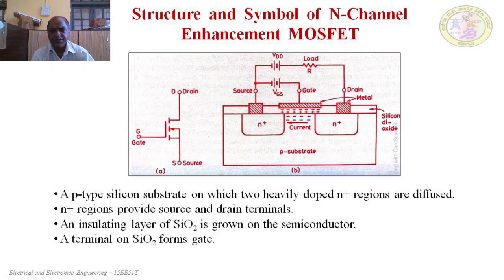In this enhancement type MOSFET, when there is no voltage at the gate terminal — even if voltage is applied between drain and source — there will not be a channel available, hence there will not be any flow of carriers through the channel. The channel is actually absent when the gate voltage is zero.